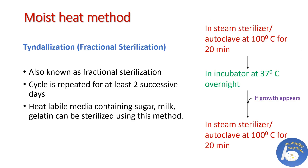Tyndallization, also known as fractional sterilization: in a steam sterilizer at 100 degrees Celsius for 20 minutes, moist heat is applied to the object, then it is placed in an incubator at 37 degrees Celsius overnight. If there is any contamination, the cells will germinate; the next sterilization process will kill them. This cycle is repeated for successive two days. Heat-labile media containing sugar, milk, or gelatin can be sterilized using this method.